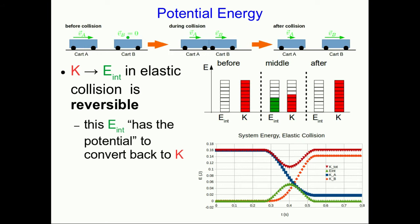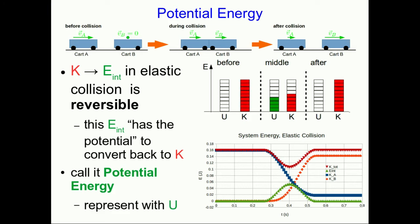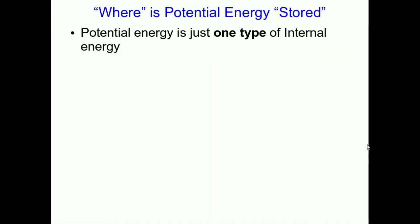Notice that this internal energy is sort of special. It can be converted back into kinetic energy — or you might say it has the potential to convert back to kinetic energy — and it's for that reason that we call it potential energy. We represent potential energy with a capital U. The capital P was already taken for things like pressure. Please keep in mind that potential energy is just one type of internal energy; not all internal energy is potential energy. The thing that makes potential energy special is that you can get it back — you can convert it back into kinetic energy.